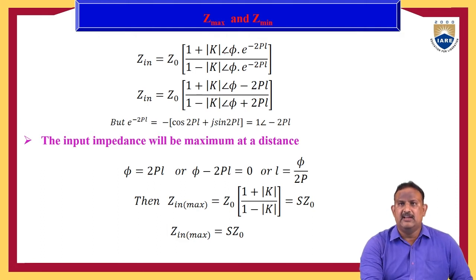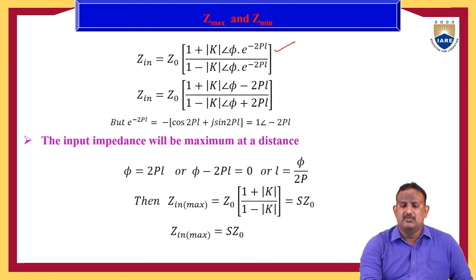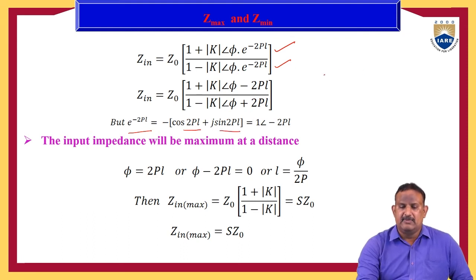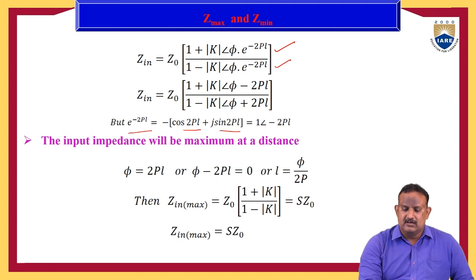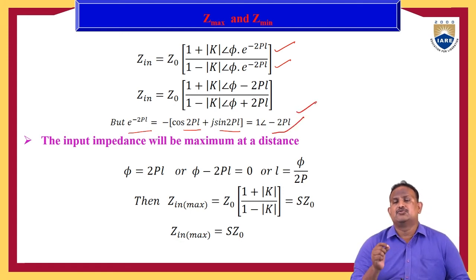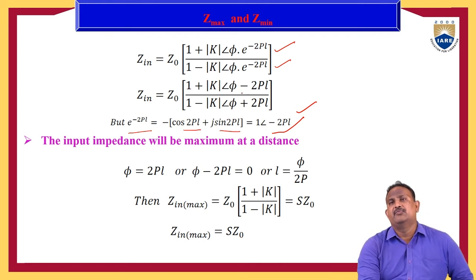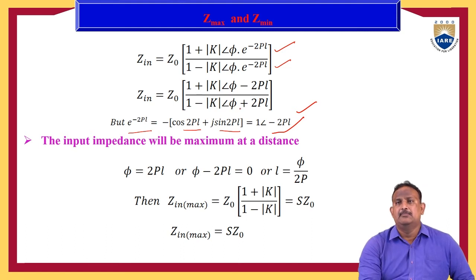The input impedance becomes Z_n = Z₀ · (1 + |k|∠(φ − 2βL)) / (1 − |k|∠(φ − 2βL)). Here e^(−2βL) can be expressed as magnitude 1 with phase angle −2βL. Adding the two phase angles, Z_n = Z₀ · (1 + |k|∠(φ − 2πL)) / (1 − |k|∠(φ + 2πL)). The impedance will be maximum at the distance where φ = 2πL, i.e., φ − 2πL = 0, giving L = φ/2π.